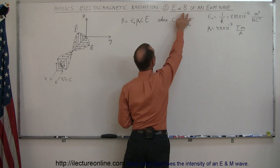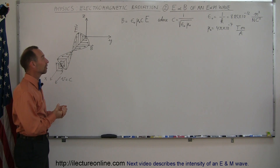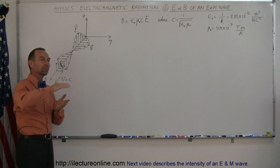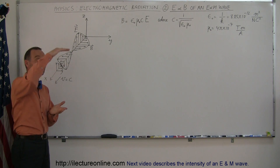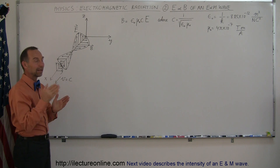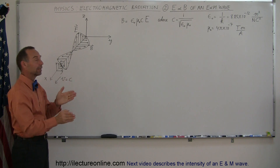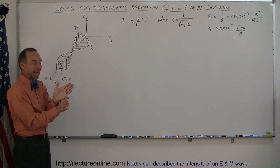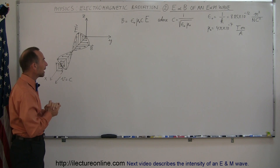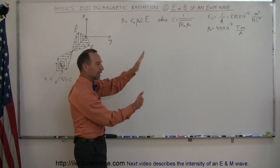We use E and B to represent those — E represents the electric field component and B represents the magnetic field component. As the wave travels through space, the electric field component oscillates at the frequency of light, and so does the magnetic field component. The electric field oscillations and the magnetic field oscillations are at right angles to one another — perpendicular, 90 degree angles. As the electric field travels like this, the magnetic field travels like that.